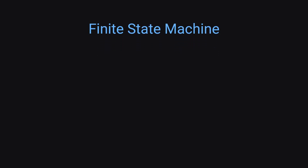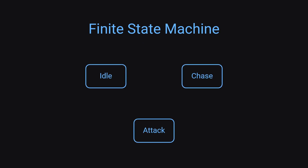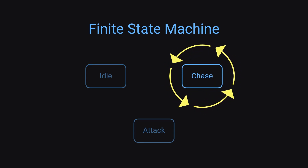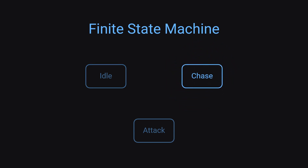In our case, we would have an idle, chase, and attack state — these would all belong to one state machine. The state machine itself is responsible for handling the lifecycle. So for example, if we're moving between states, it's responsible for calling the exit function on the previous state and the enter function on the new one. It's also responsible for keeping track of what the current state is. Usually, the actual state machine is completely agnostic to what states are inside of it — it just needs to know what the current state is and what state you want to move to.